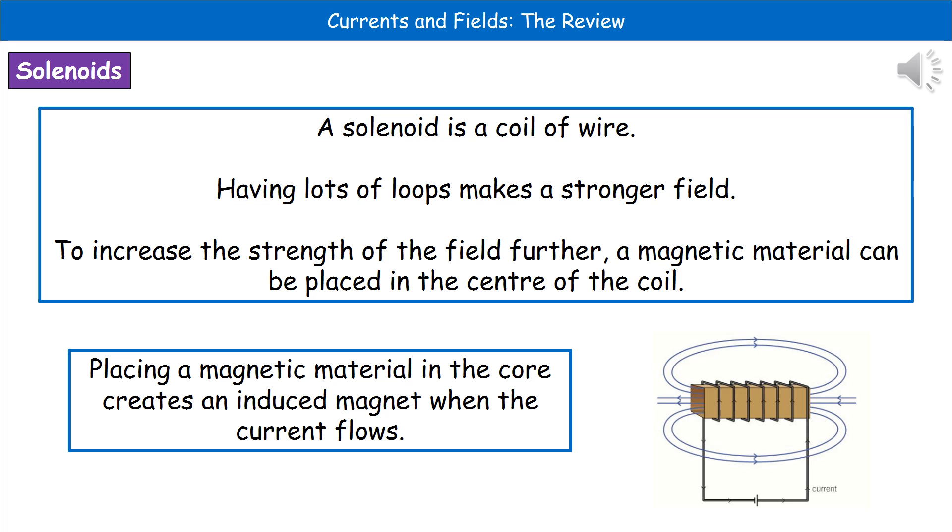If we're talking about a coil of wire, we can also refer to this as a solenoid. What we find is that if we've got a large number of loops of wire in that coil, we can generate a stronger field. Basically, the more coils, the stronger the field will be.